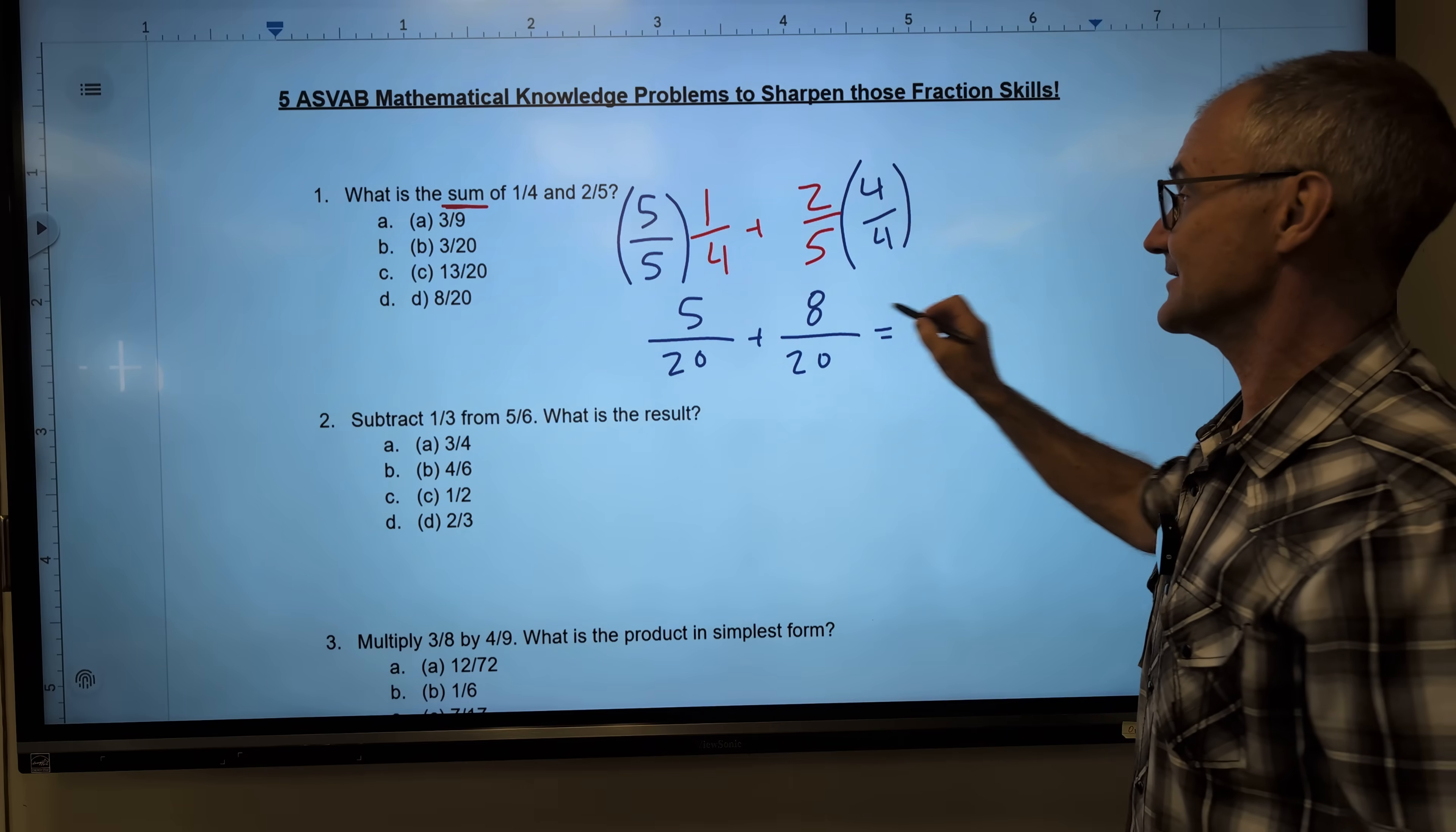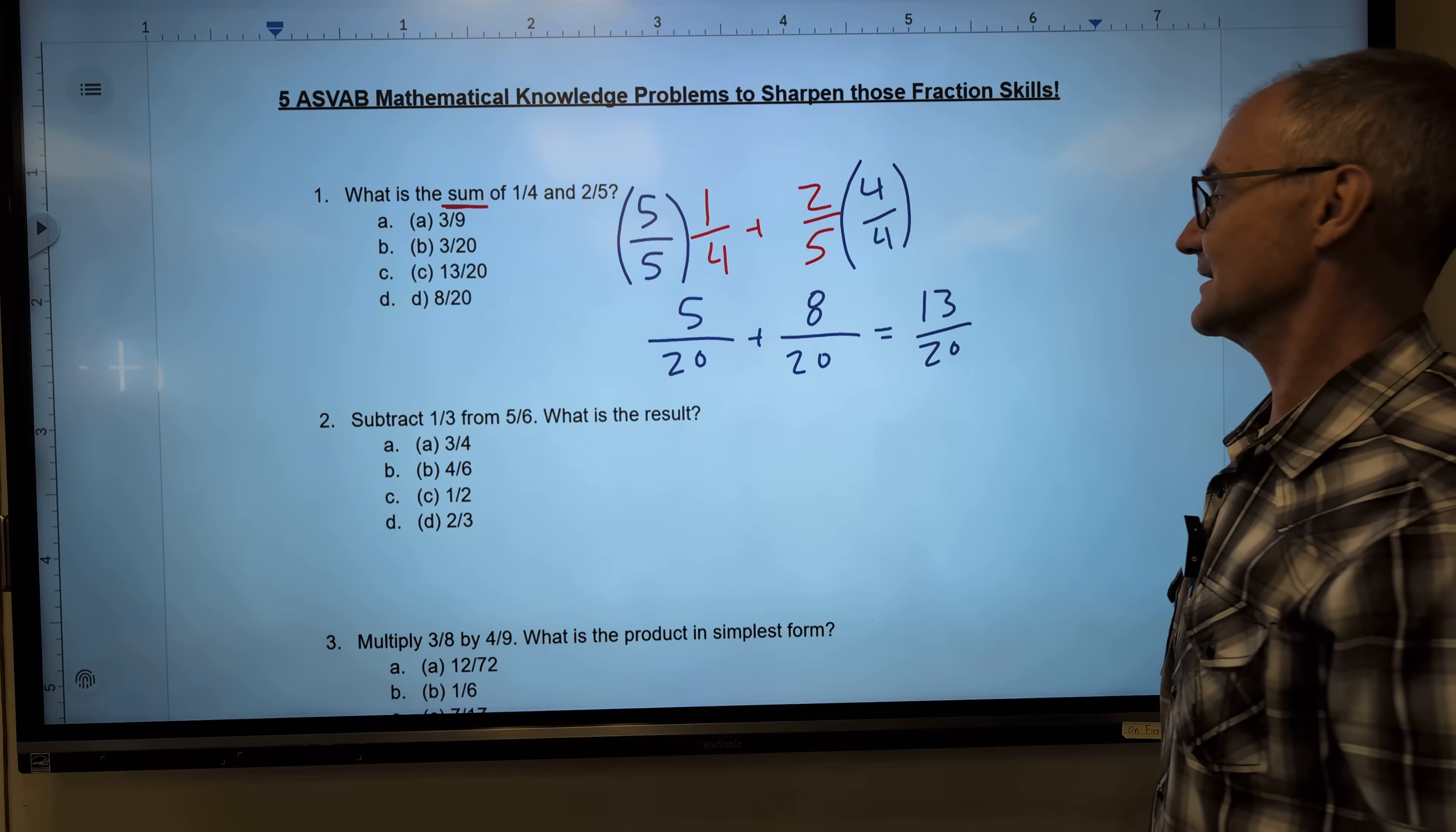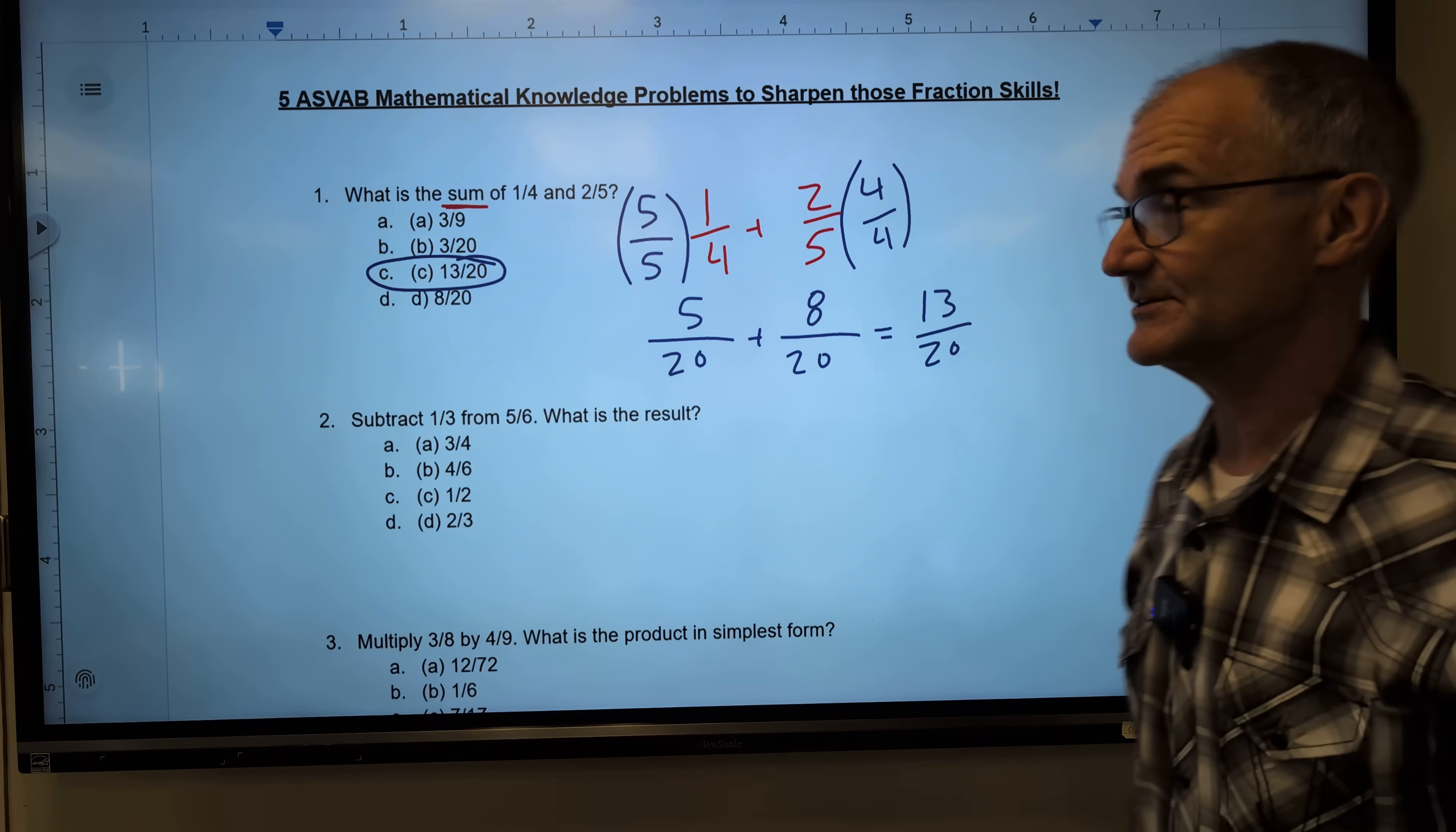All I do is I add across the top, keep the bottom the same. So I keep that common denominator. Answer is 13 20ths. Answer C. Hopefully you got that one.